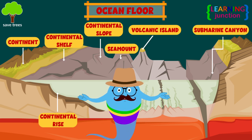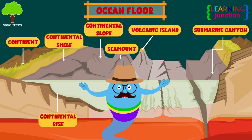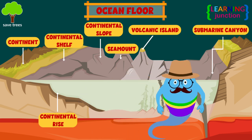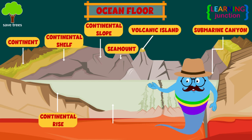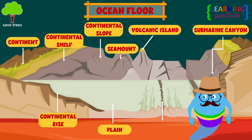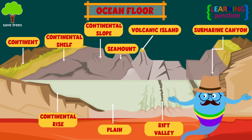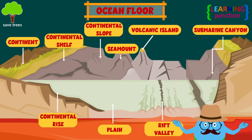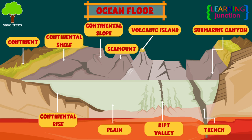This part is called the continental rise, which is made up of thick sequences of continental material. Here you can see the plain. This lowland region is the Rift Valley, and here are the deep cracks known as the Trench.